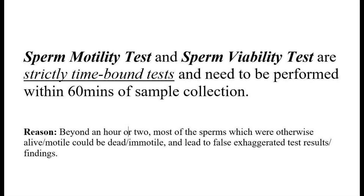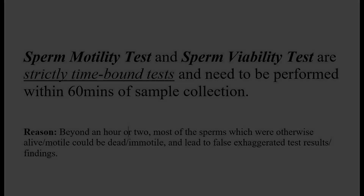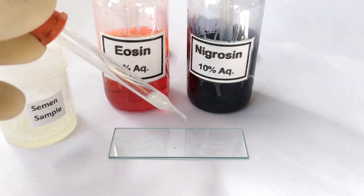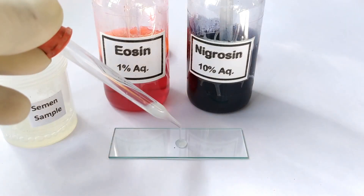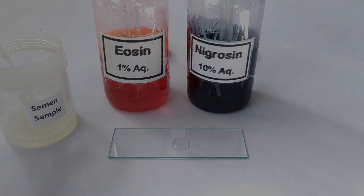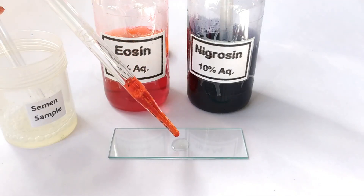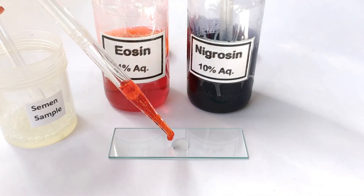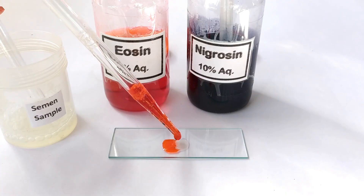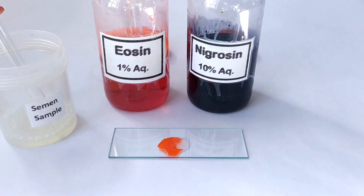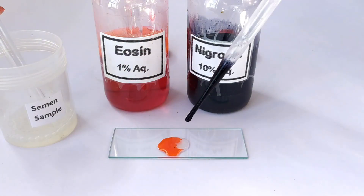Just as in the sperm motility test, sperm viability test is also assessed within 60 minutes of collection of the sample. A drop of liquefied semen sample is taken on a glass slide, and five drops of eosin-nigrosin stain or two drops of 1% eosin and three drops of 10% nigrosin stain is added to the sample.